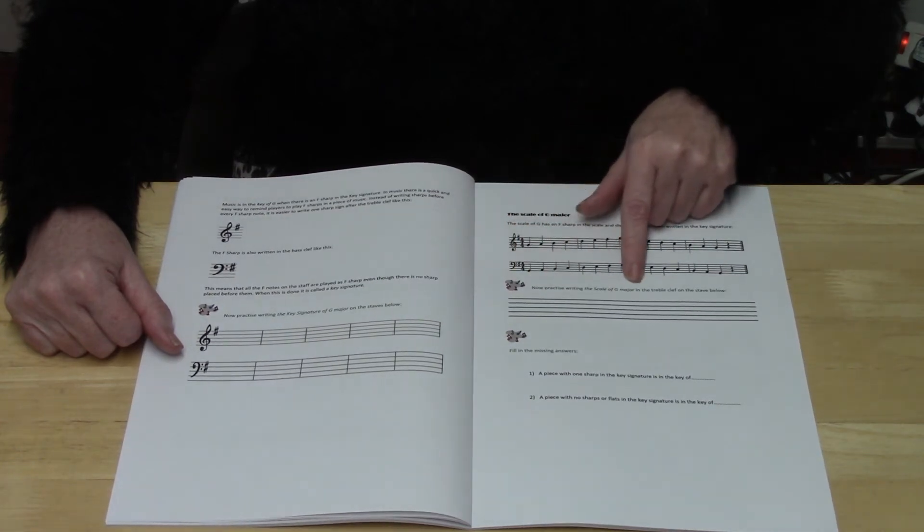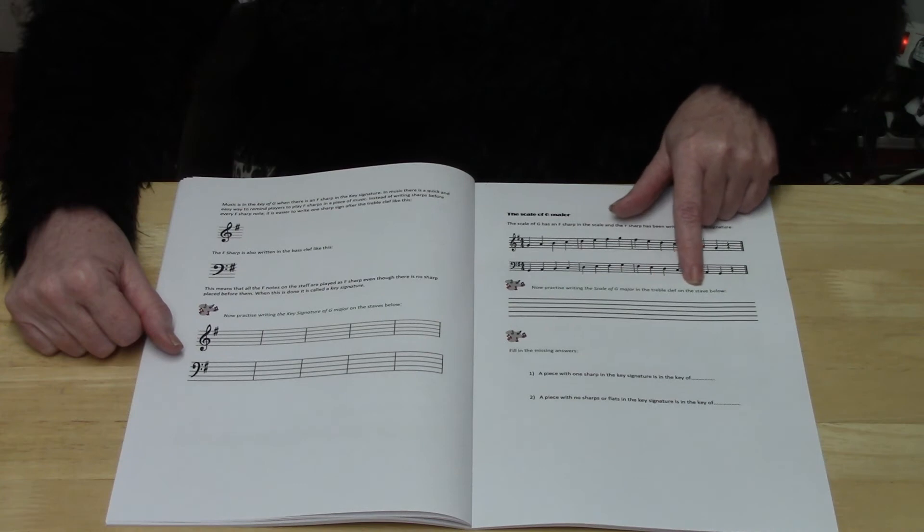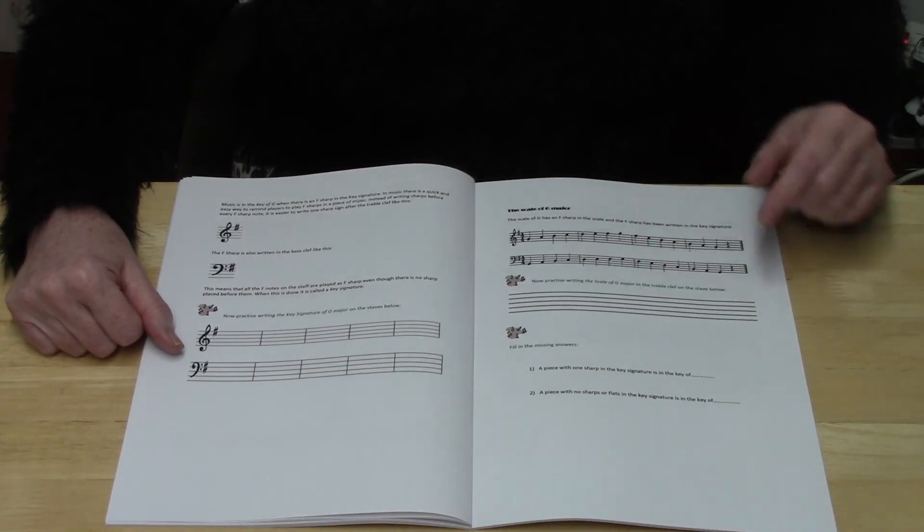Then you're asked to practice writing out the scale of G major in the treble clef on the stave below.